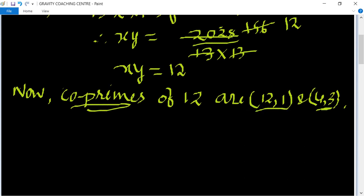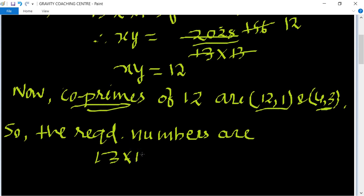So the required numbers are 13 × 12 comma 13 × 1, and another number is 13 × 4 comma 13 × 3.